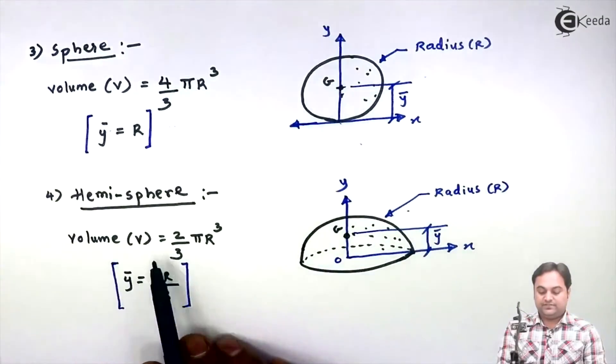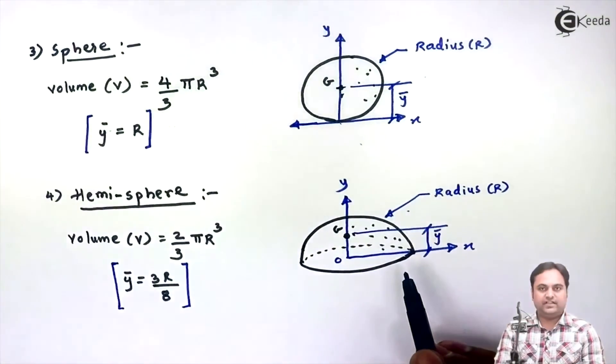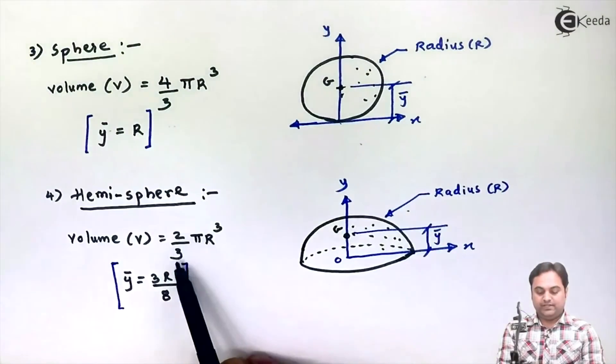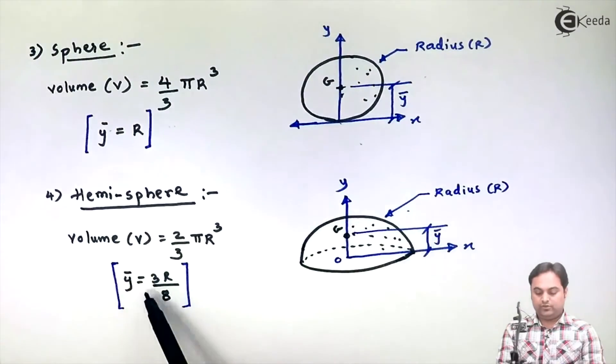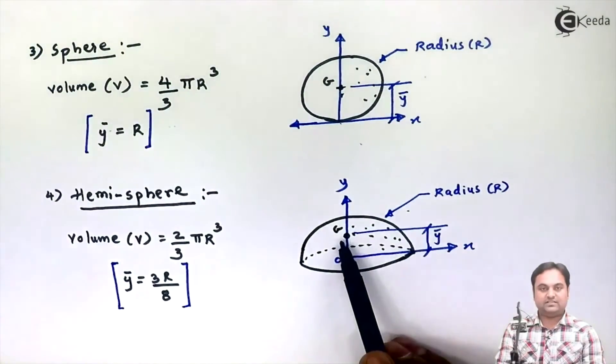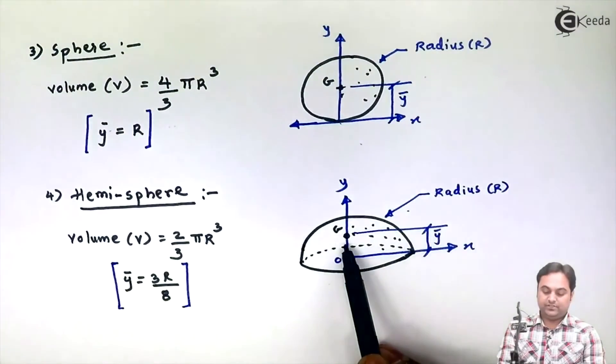And at last we have CG for a hemisphere. Hemisphere is the half of the sphere, having radius R. Its volume is 2/3πR³. Y bar is the location of CG for this hemisphere from the bottom or from X axis, and this Y bar value is 3R/8. So here is the location of CG for a hemisphere.